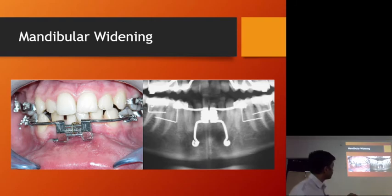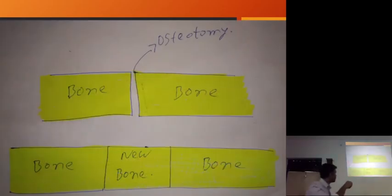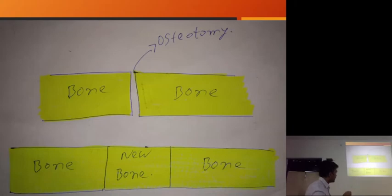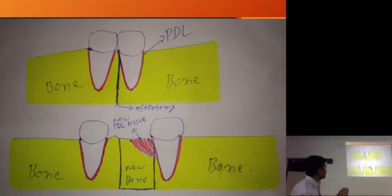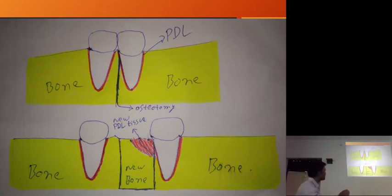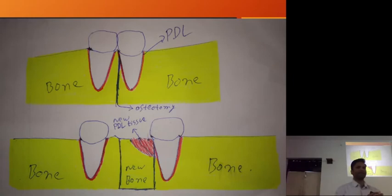We perform an osteotomy cut at the midline between the two central incisors. Wherever we perform the osteotomy cut and pull the segments, we get new bone formation. Remember that the new tissue being generated is dependent on what tissue is lying adjacent to it. If by mistake we involve the PDL space of one tooth, we're going to see a mixture of PDL and new bone at the site.